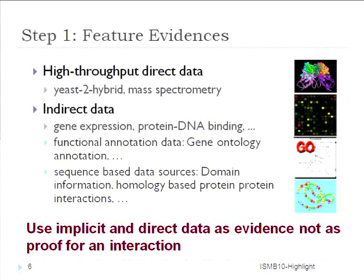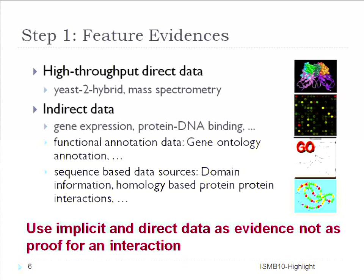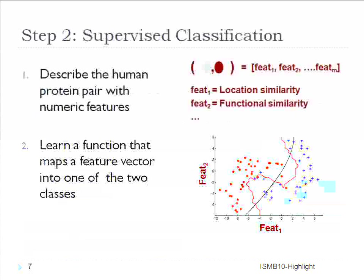The motivation of the first step: we use all available feature evidence information as feature variables to represent each receptor-to-human protein pair. We can use yeast two-hybrid or mass spectrometry interaction data as feature variables, correlation of gene expression values of the two partners, and potential interaction patterns of their domain structures. Essentially, we use this implicit or direct data as evidence — as feature variables, not as proof.